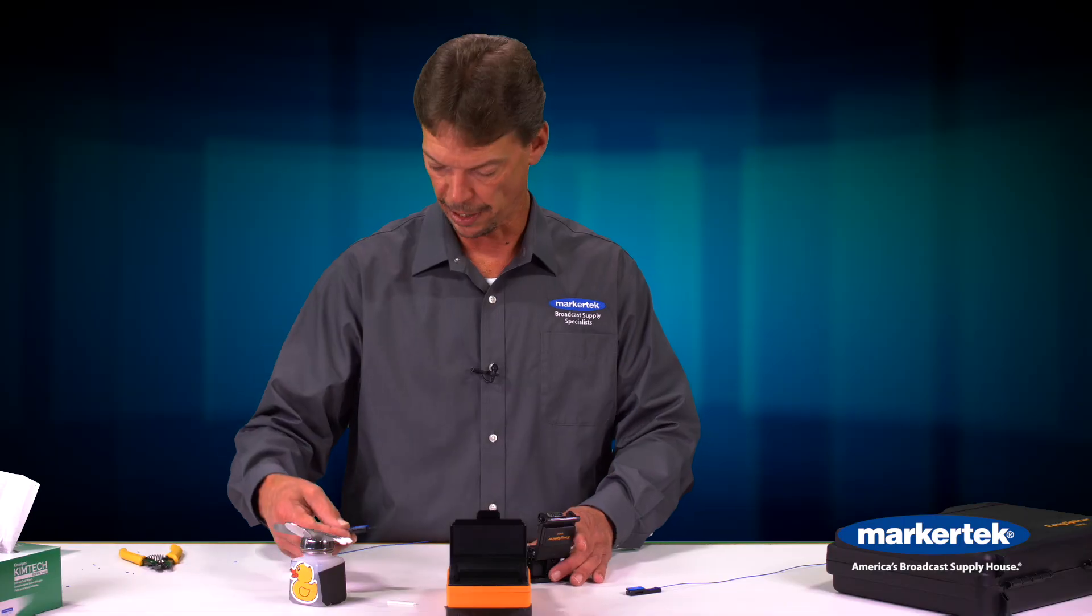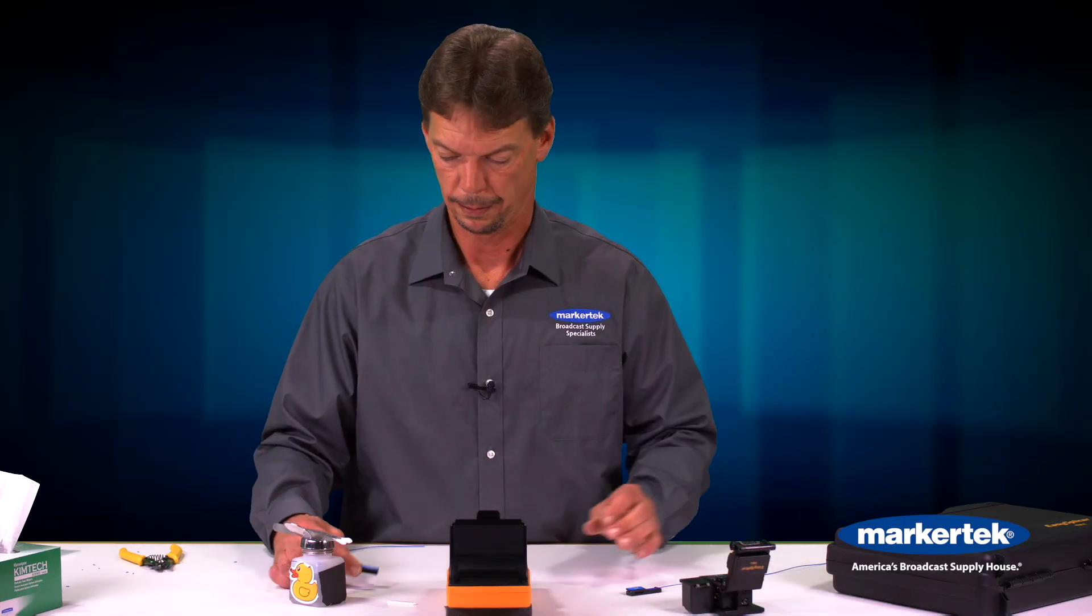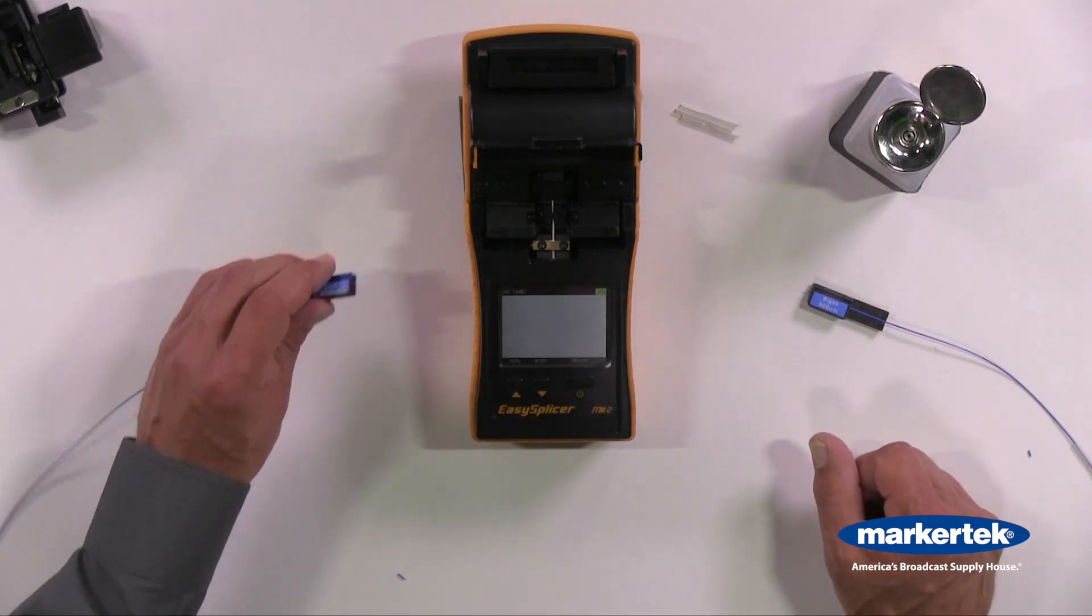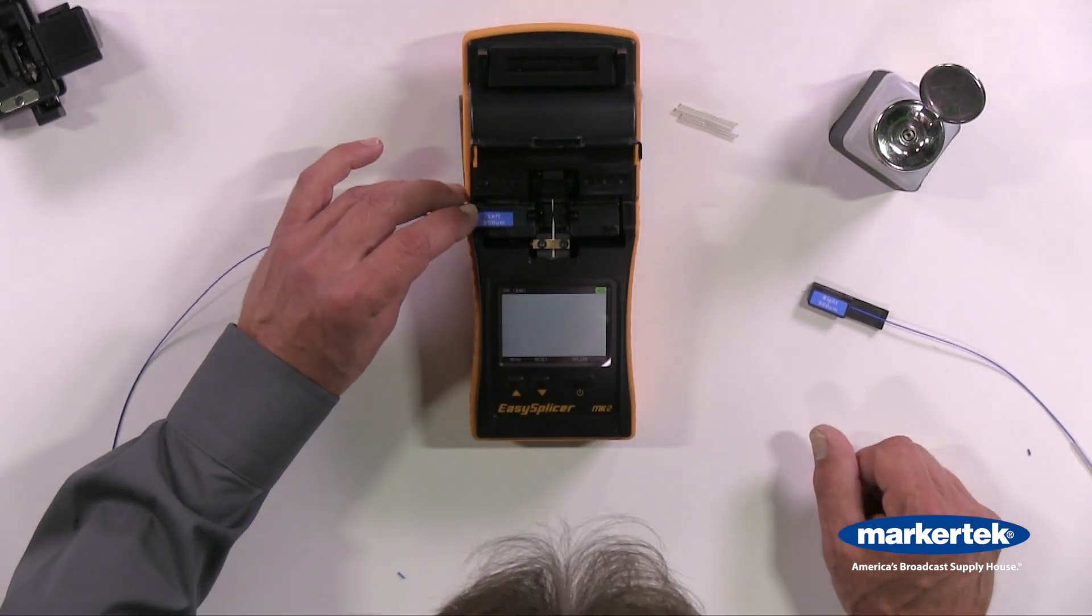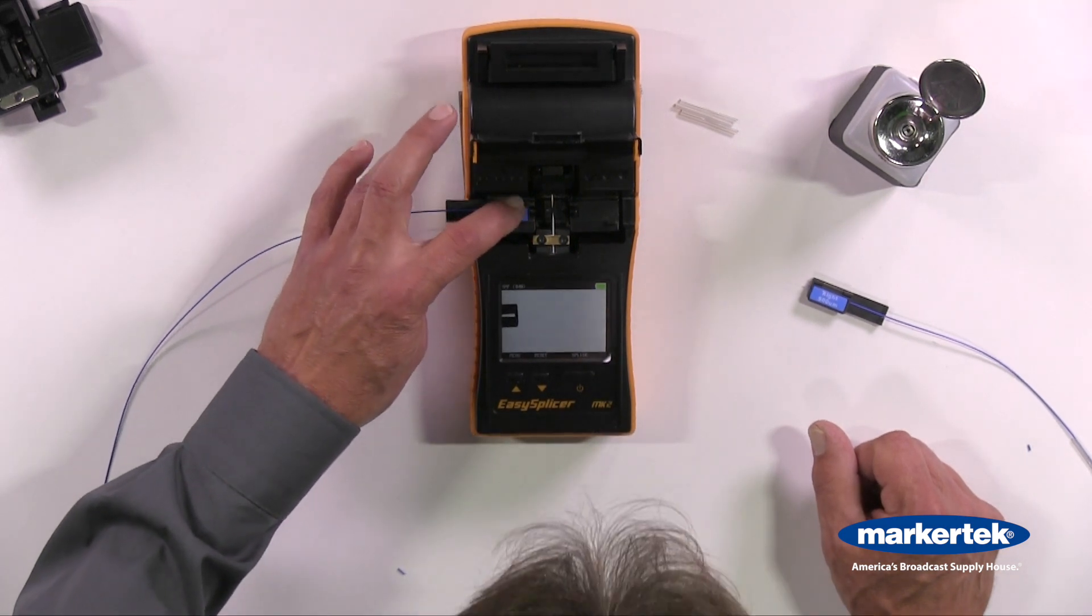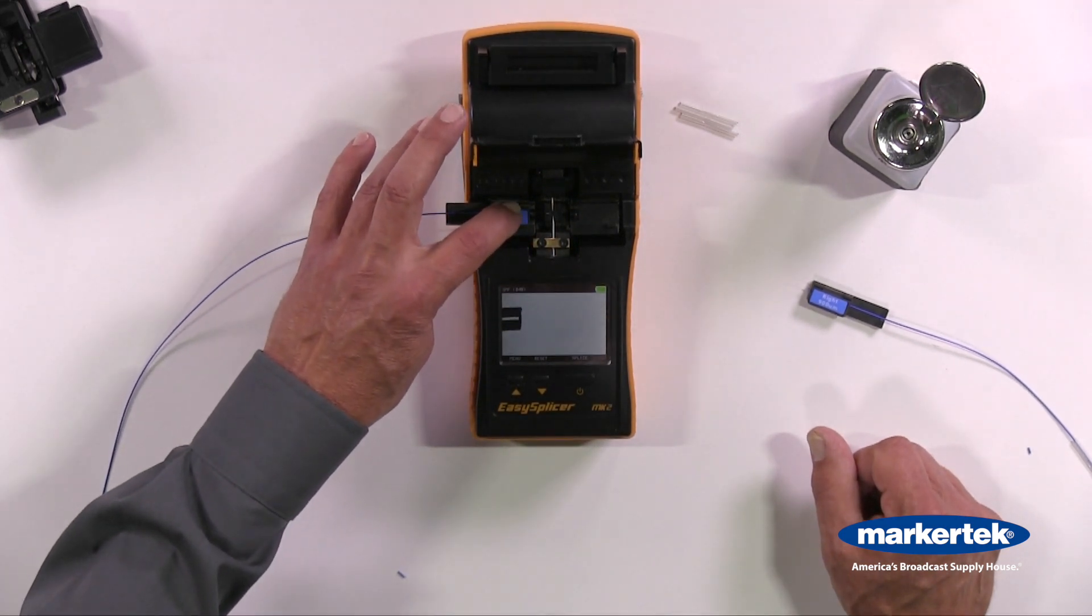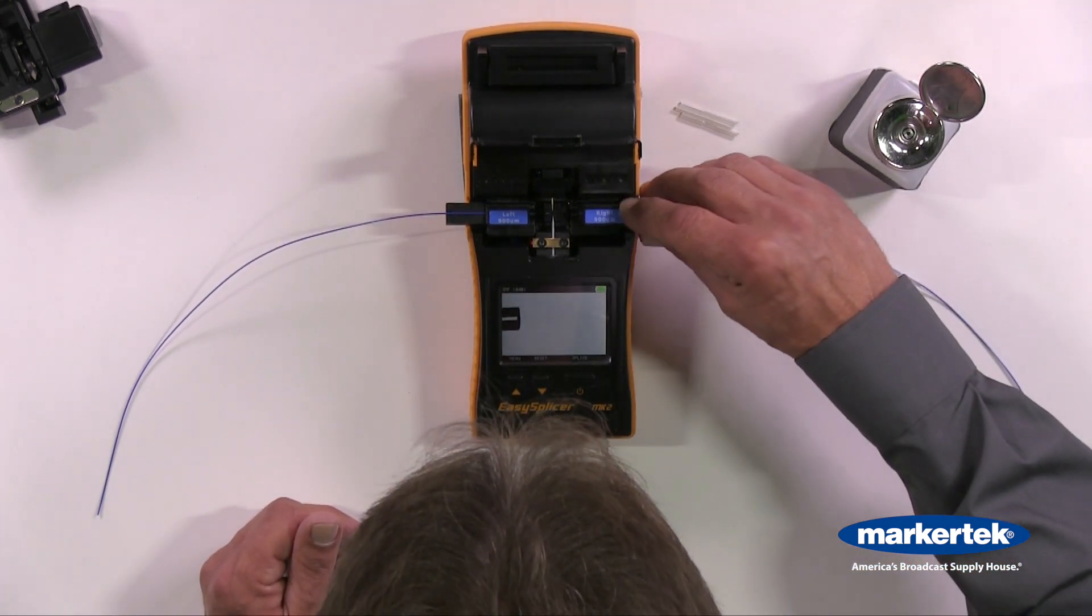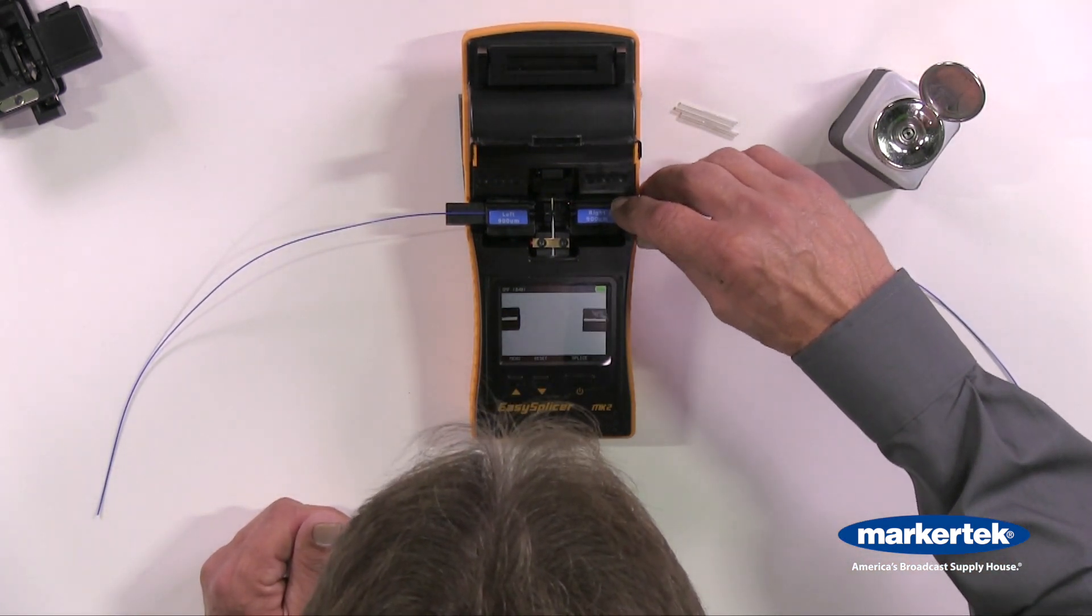And now both fibers are ready. Let the magnets push it all the way in. We're going to put the right side in, making sure the fiber is within the V-Groove.